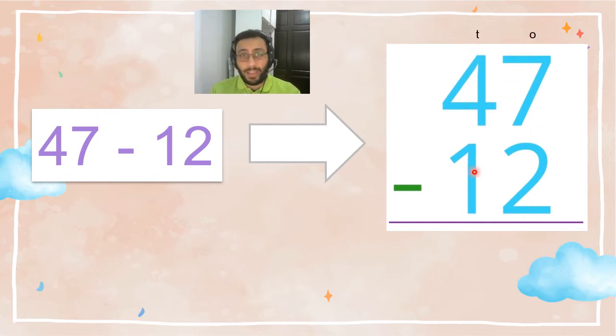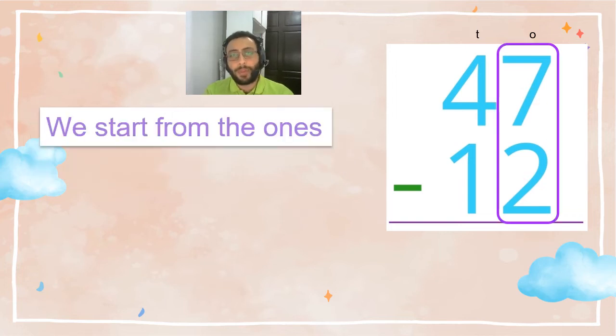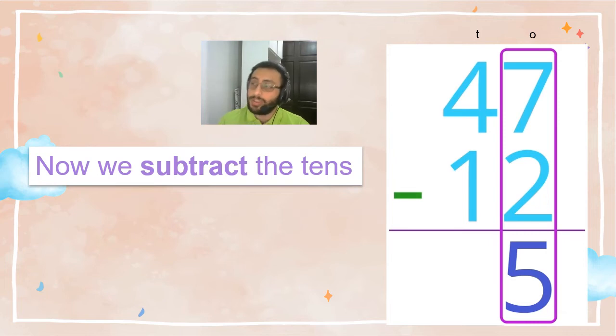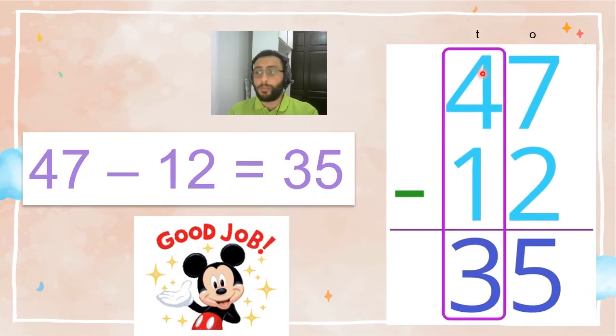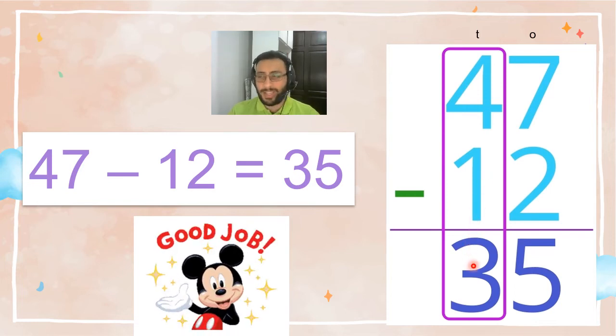7 minus 2—what is 7 minus 2? We have 7, 2 are gone, so now we are left with 5. Now that we are done with the ones, we start with the tens. 4 minus 1 equals 3. Quite easy.